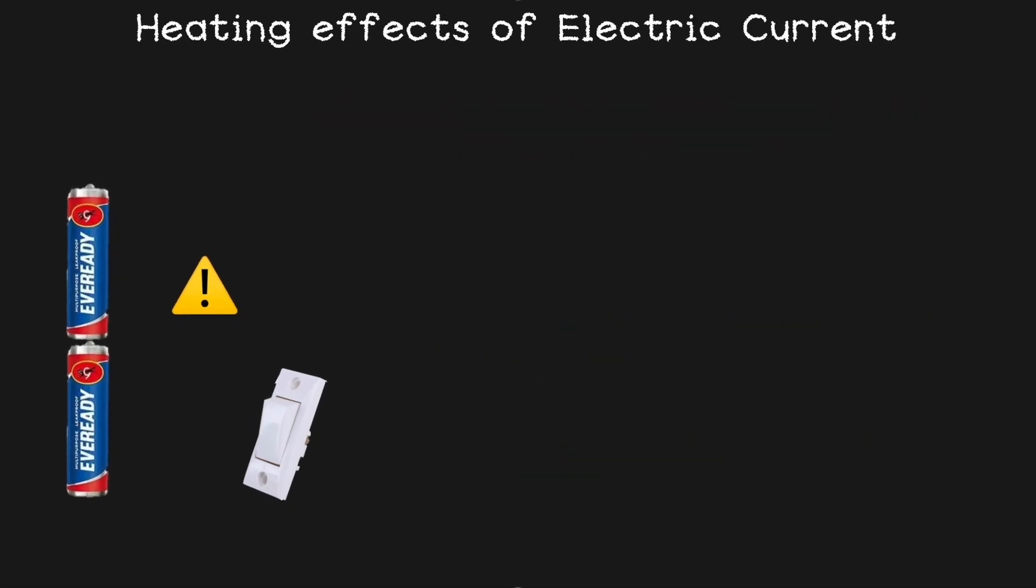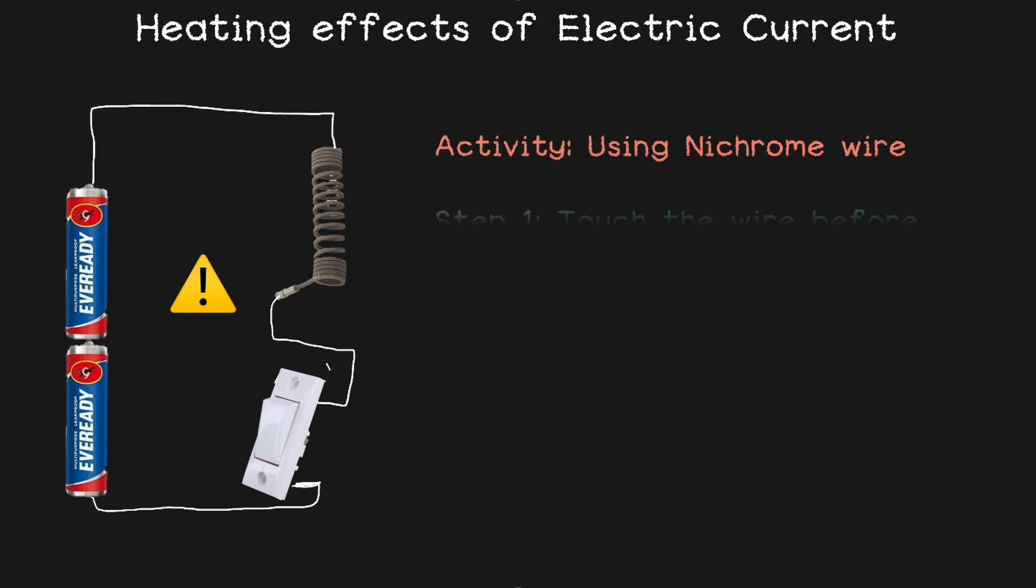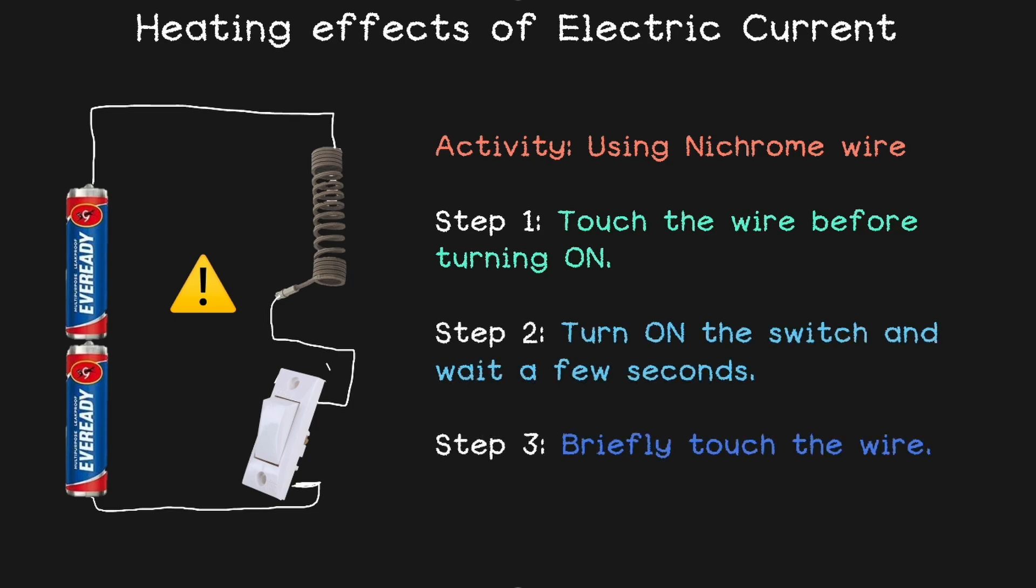Now let's try the same activity with a nichrome wire. Nichrome is kind of a metal mixture called an alloy that gets hot when electricity flows through it, which is why it is used in heaters and toasters. Use a thin nichrome wire tied between two wires and connect it to two batteries as usual and there is a switch to control the electric current.